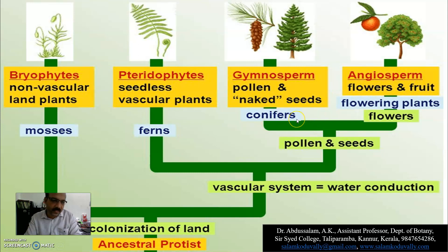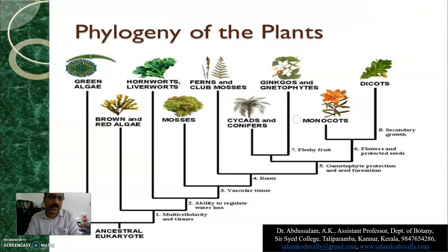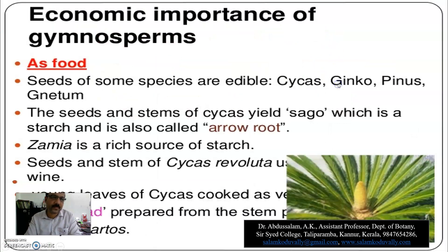All these are some of the important additional information for your empowerment and enrichment of knowledge. These are some of the most important aspects of the phylogeny of plants — phylogeny means evolution — just for your information. We will continue the discussion in the next class.